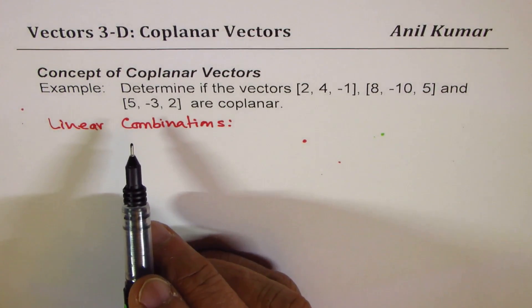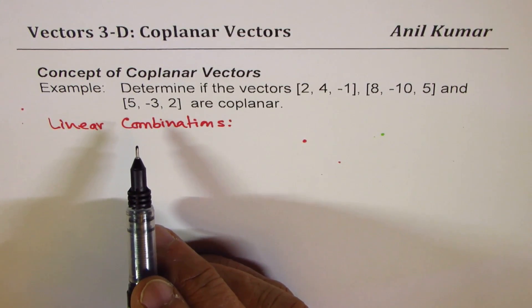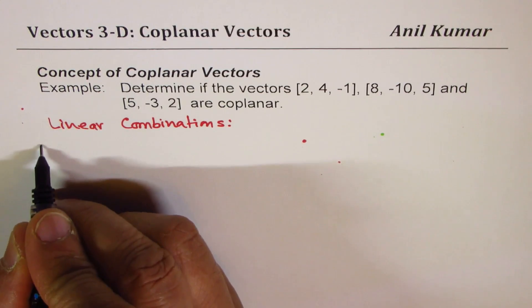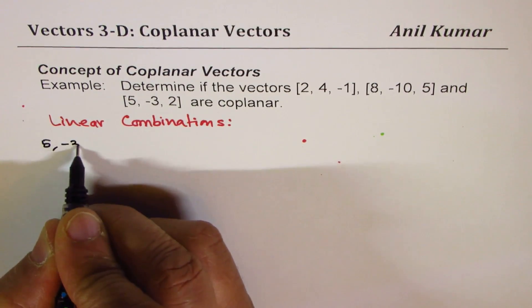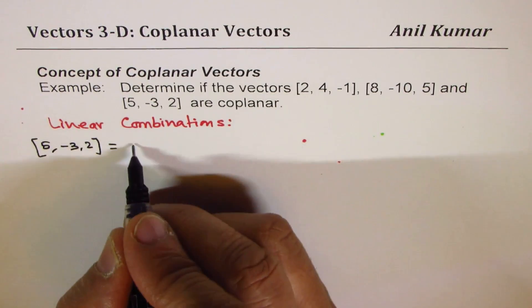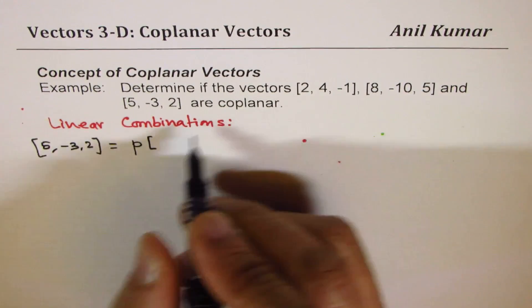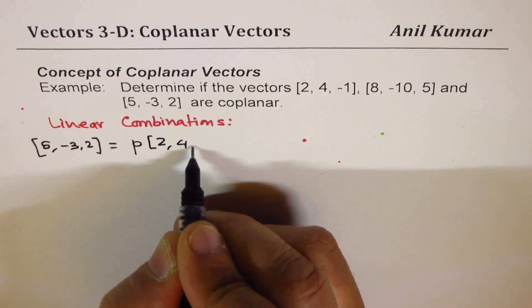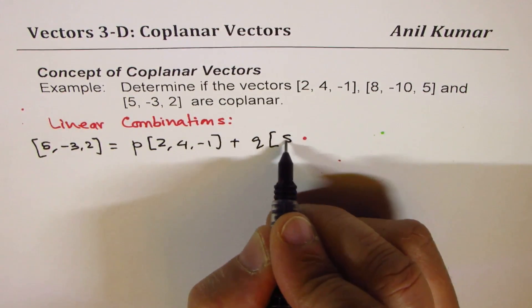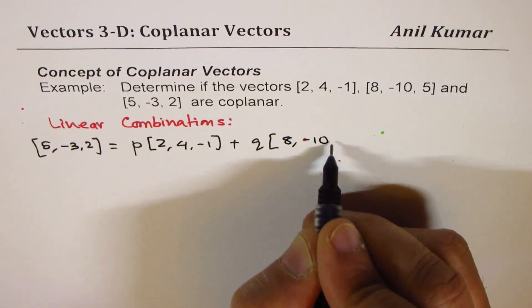A linear combination really means that we have to write one vector as a combination of other two. Let's write [5, -3, 2] as a combination of these two vectors. Let's say P times [2, 4, -1] plus Q times [8, -10, 5].